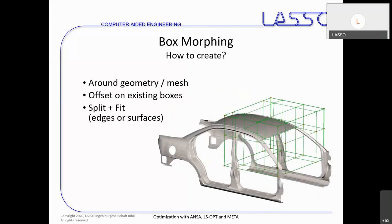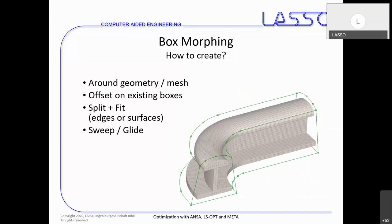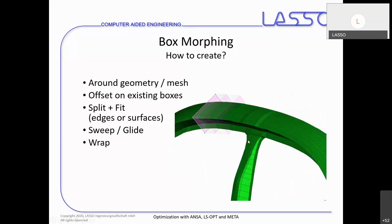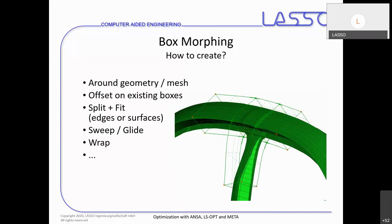We can split boxes and attach edges — but also surfaces — onto the geometry. For example, the front line of the roof is attached to a morphing edge, and some additional control points are inserted to capture the curvature. We can sweep or slide a cross section through a model according to its shape, and we can use wrap functionalities to build boxes that are wrapped around our geometry. We can also explicitly select points, lines, or edges, or connect boxes by their faces.